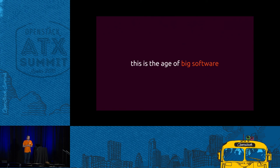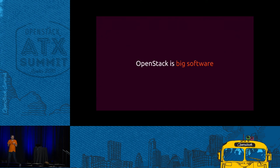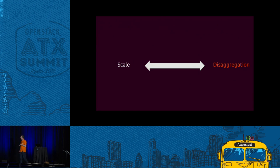Examples of big software include Hadoop, Platform as a Service technologies like Cloud Foundry, OpenShift, or Heroku — comprised of many components spread across different platforms. OpenStack is big software. There are 54 different OpenStack projects. In a sane architecture you'd have those spread across multiple machines, which creates a management challenge. How do you deploy and manage that environment?